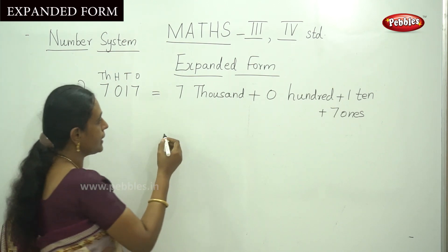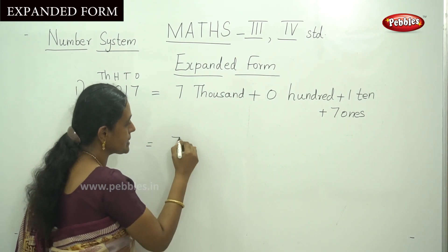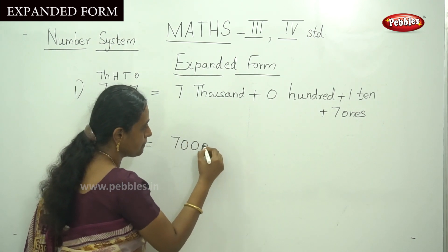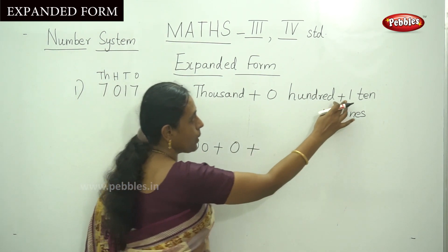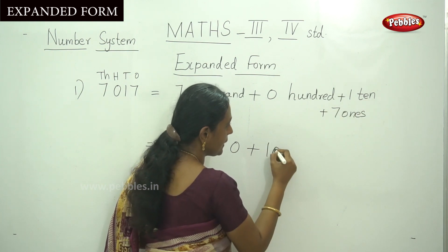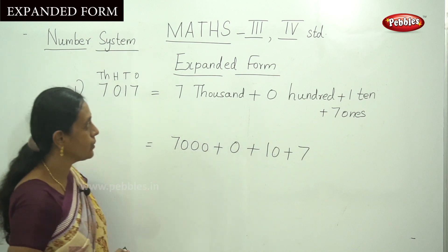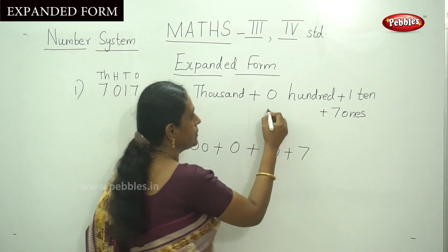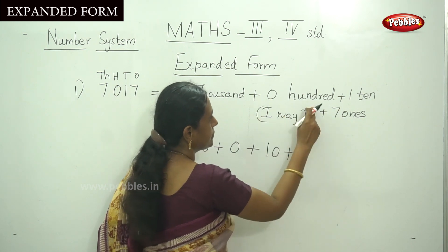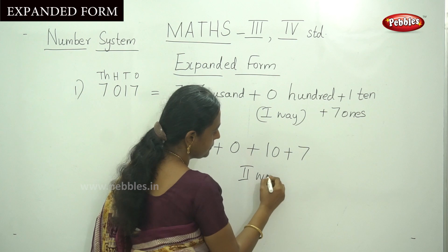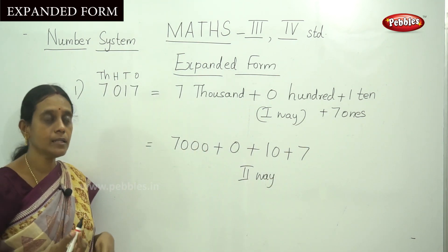The second way is that you have to write down the number — that is seven into thousand, that means seven thousand, plus zero hundred, you put zero. And that is one ten, that is ten, plus that is seven ones, seven. This is the first way and this is the second way to write down the number in an expanded form.